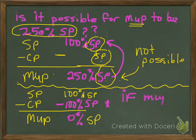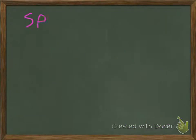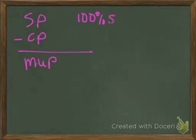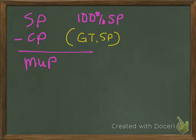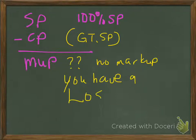What if my cost is greater than my selling price? That's a legitimate question. If I've got 100% of my selling price and I subtract something that is more than 100% of selling price — meaning cost price is greater than selling price — do you have a markup at all? No, you don't. There's no markup in this case. In fact, what happens if your cost price is greater than your selling price? You have a loss. You don't have a markup; you have a loss. That's an entirely different situation.